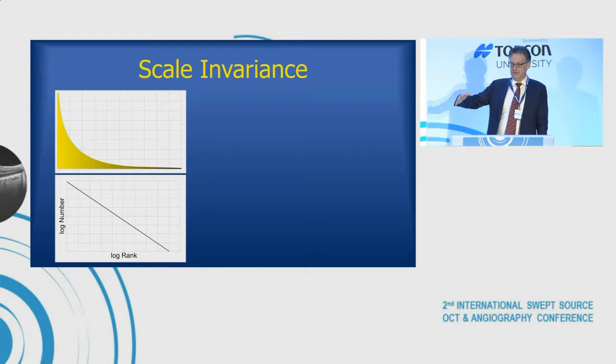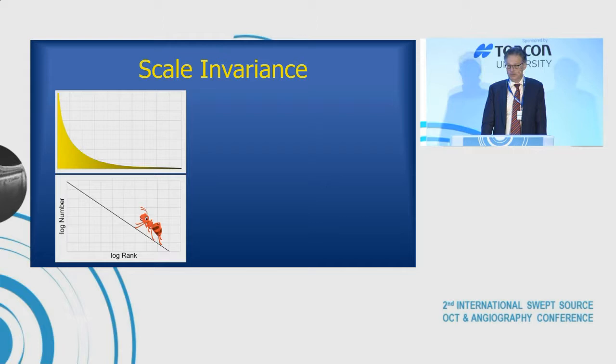There's a characteristic of this called scale invariance. If we were looking on that log-log plot as a little ant, we wouldn't know where we were on the plot, because no matter where we were the slope of that line would be the same. So no matter what scale we look at, it's the same relationship.